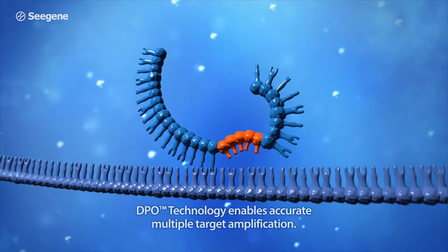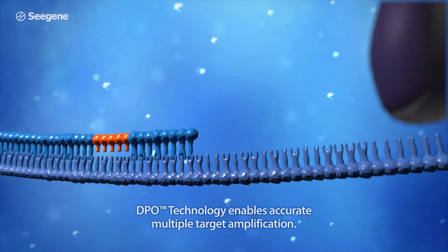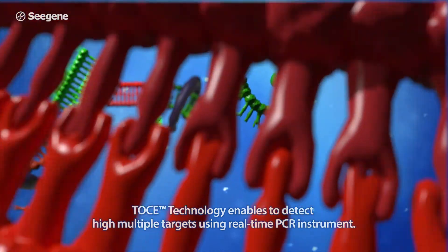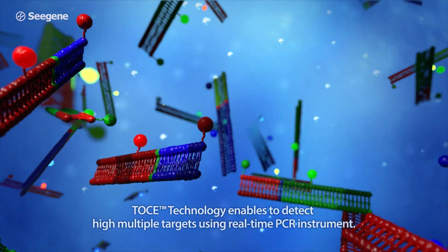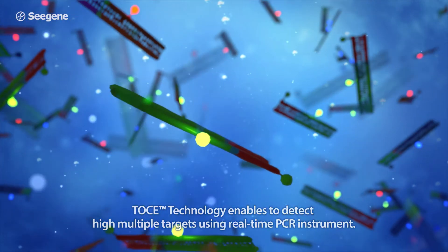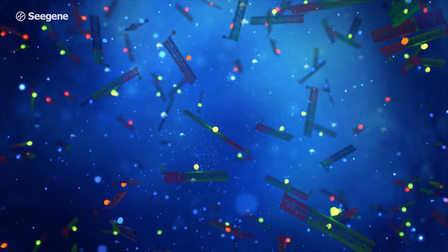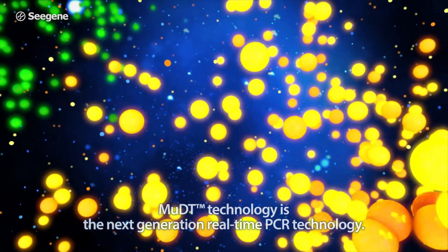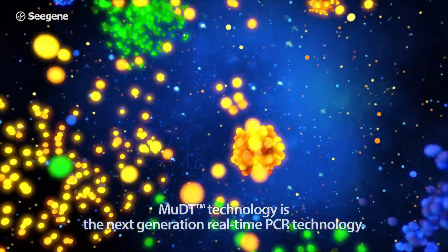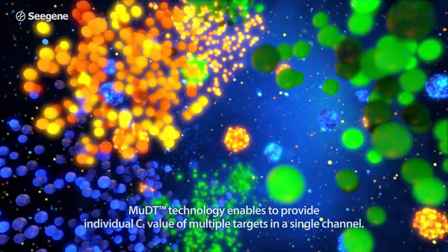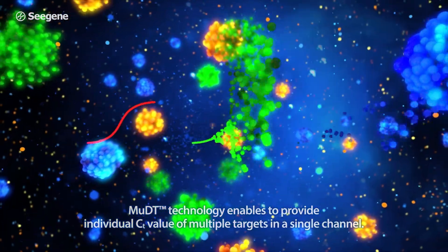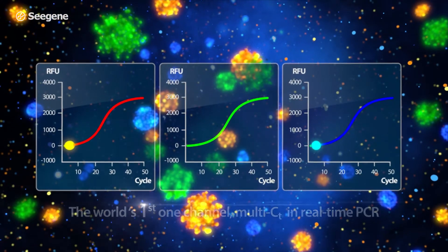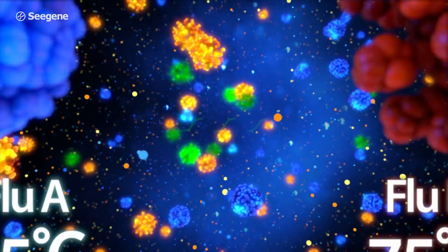Cgene is also the company behind DPO technology, providing superior multiplex PCR, and TOS technology for establishing arbitrary melting temperatures to identify targets. MUDT technology is the next-generation real-time PCR technology. The MUDT algorithm measures fluorescence intensity at multiple temperatures using DPO and TOS technology-enabled assays.